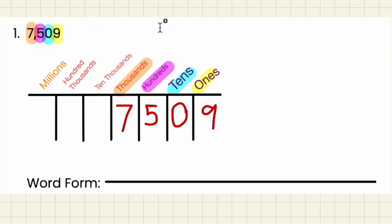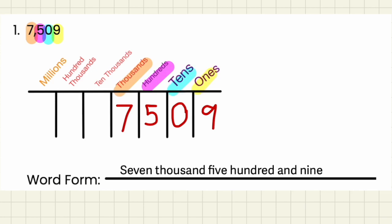So again we start off on the left hand side and then move our way to the right. Our first number on the left hand side is 7,000. So we can write 7,000 and then it's 500. So we write 7,509.